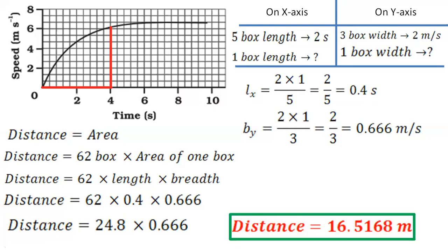Now let us proceed for the next question. The second question is: which part of the graph represents uniform motion of the car? For uniform motion on a speed-time graph, we should get a straight line, because the object covers equal distance in equal time. You can see the curved line represents non-uniform motion. We need a straight line, which starts from the sixth second.